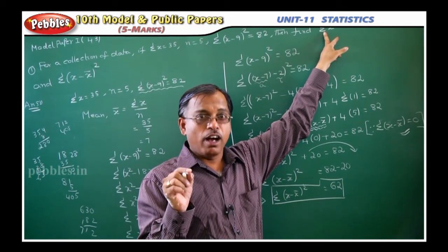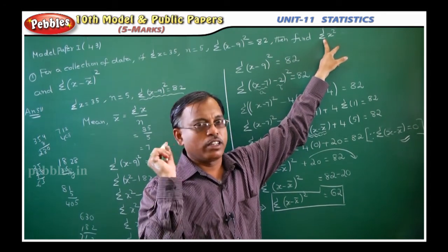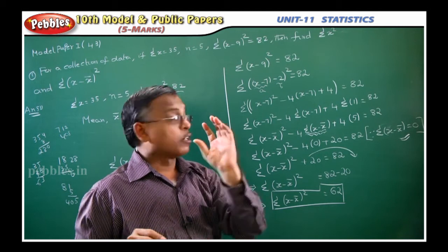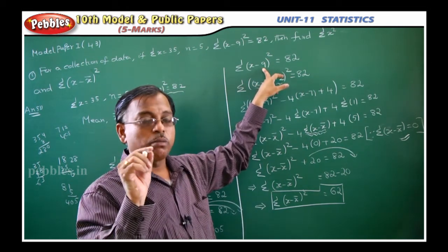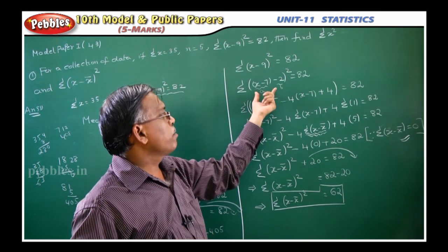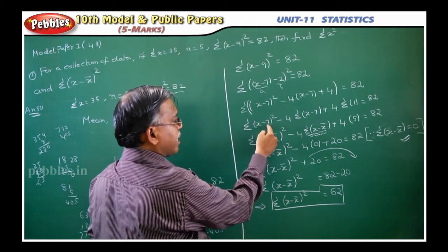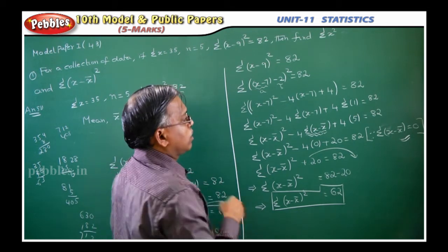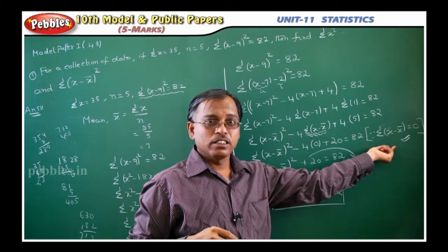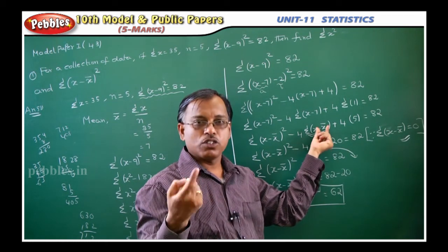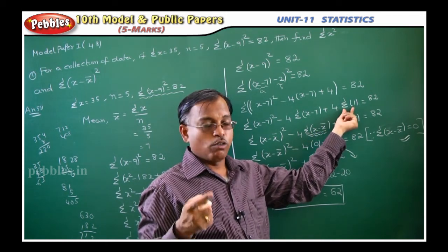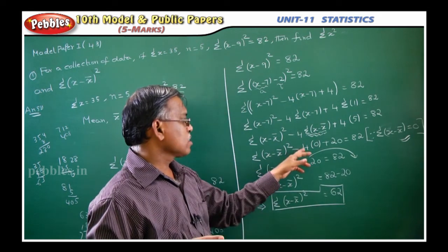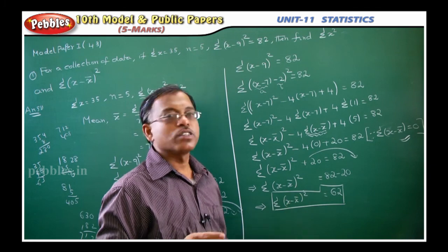Very simple. For both values, you have to make use of the given data only. First, find mean x̄, then expand the formula to get sigma x square. Similarly, by rewriting minus 9 as minus 7 minus 2, you introduce x̄ and apply the (a minus b) whole square formula again. The key result is that sigma (x minus x̄) equals 0. So sigma 1 equals 5, giving 82 minus 20 equals 62. Very easy.